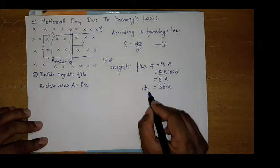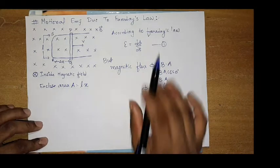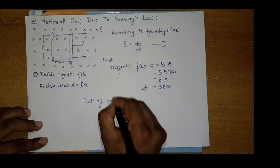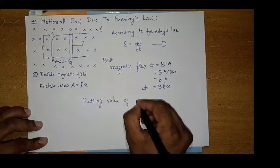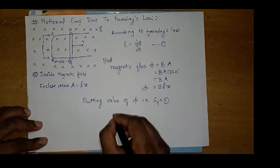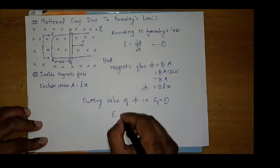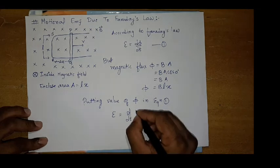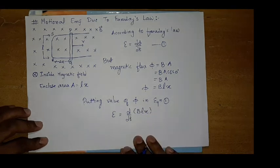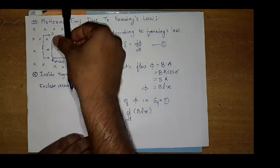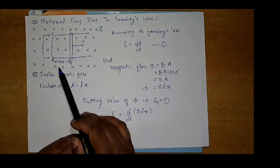Putting value of flux phi in equation 1, it becomes induced EMF epsilon is equal to d by dt of BLx. Now here B is constant, L is constant, only variable is x, because rod is moving in this direction so x changes. So it is BL in a bracket dx by dt.